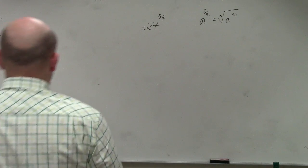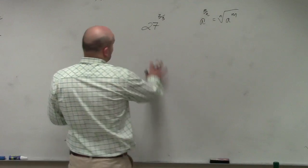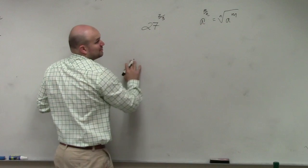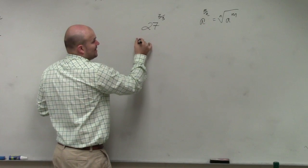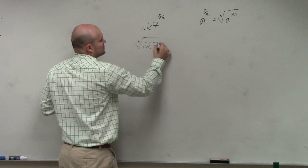You guys are going to do this on a non-calculator portion of a test. First of all, if the only thing you remember is to rewrite it in this format, you have the cube root of 27 squared.